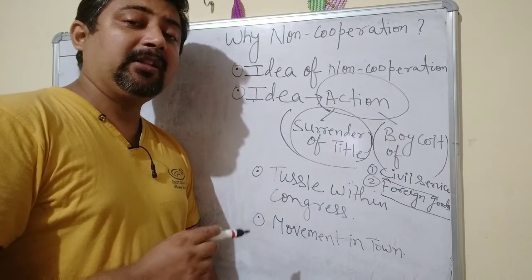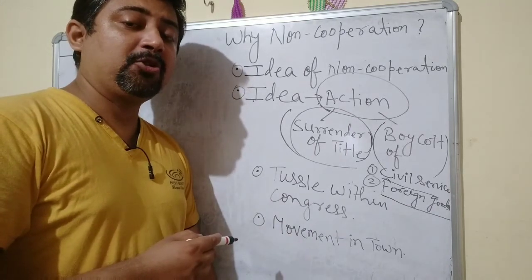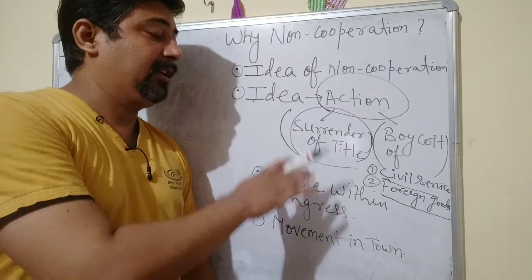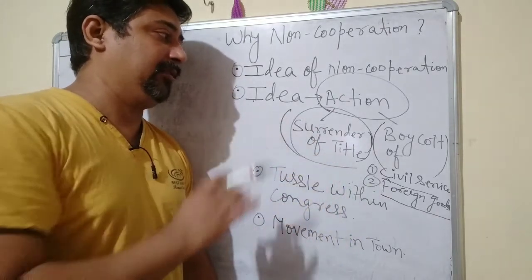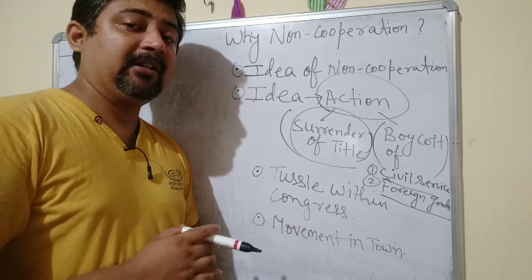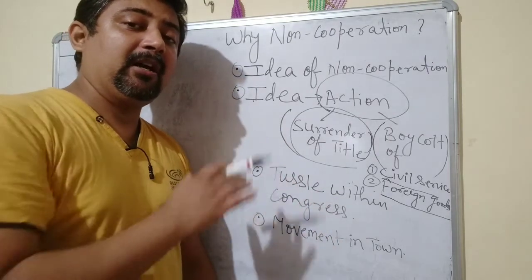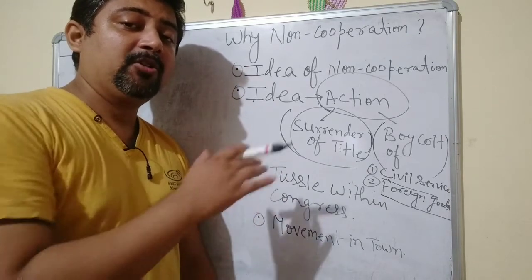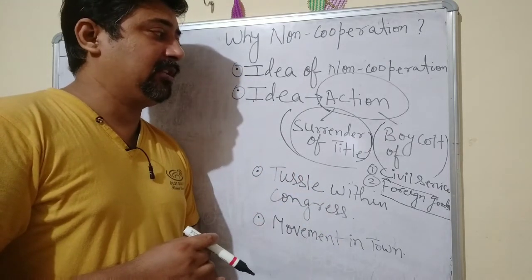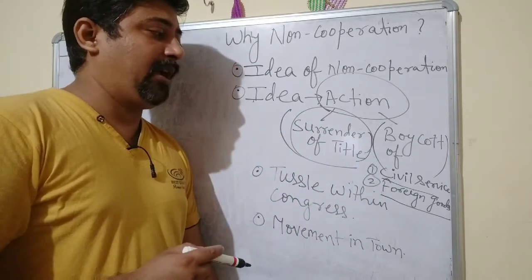The surrender of titles meant that all the titles given by Britishers to Indians were returned back, in order to show disrespect and anger. All of them, including Gandhiji and Rabindranath Tagore, decided to return their titles. After Jallianwala Bagh, Rabindranath Tagore returned his title of knighthood. Similarly, Gandhi asked many leaders of the time to return the awards given to them by the British. This was the first step under the non-cooperation action program.